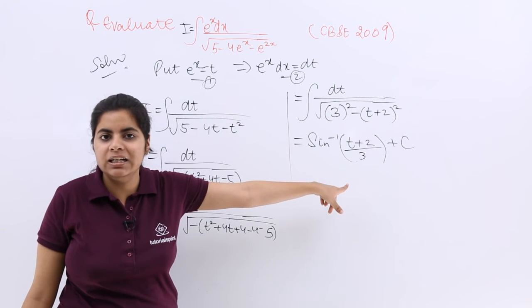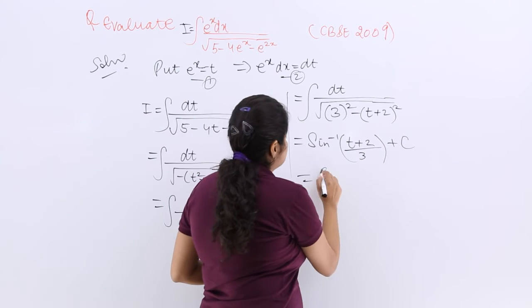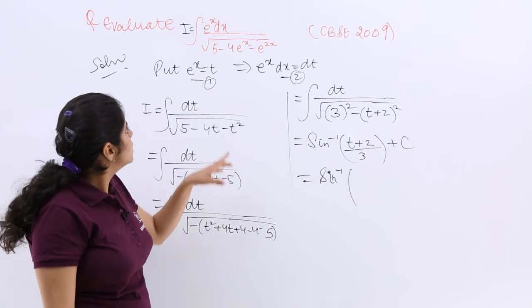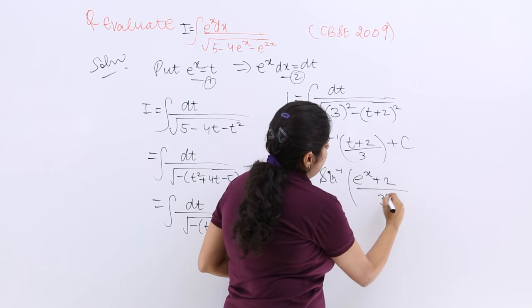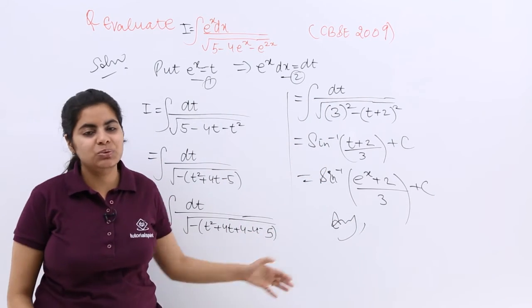But can we leave the answer here? No because it is in t. You have to make it in x. So it becomes sine inverse t is what? t was e raised to the power x. So e raised to the power x plus 2 upon 3 plus c and that is your answer to this question.